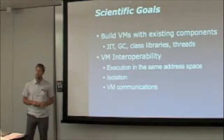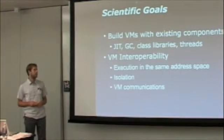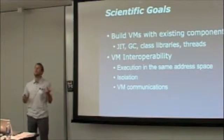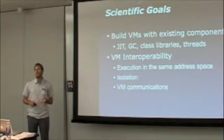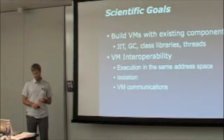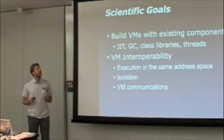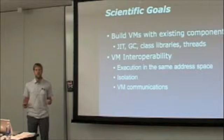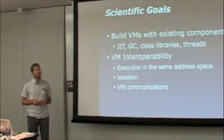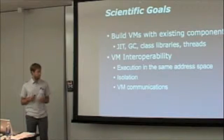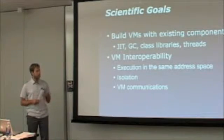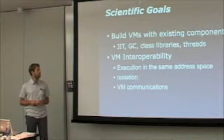The scientific goals for VMKit are twofold. First, we can build virtual machines very easily by using existing VM components. So we didn't want to implement the JIT, we didn't want to implement the garbage collector, we didn't want to implement the class libraries — for example, the Java lang libraries — and we didn't want to implement threads. So if we could use existing VM components, we could build easily high-level virtual machines such as JVM and .NET virtual machines.